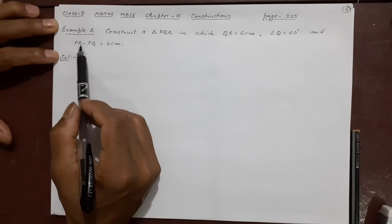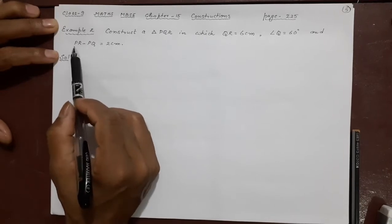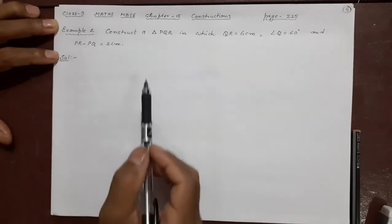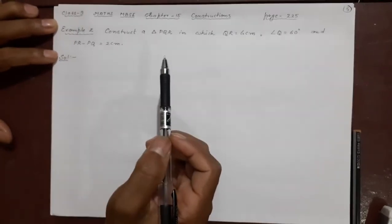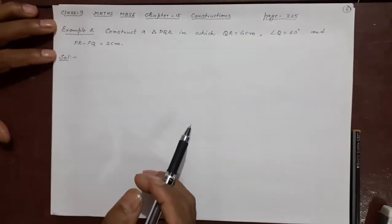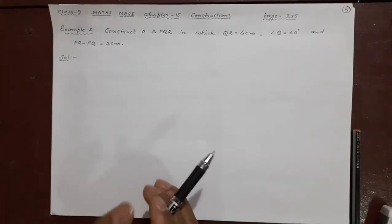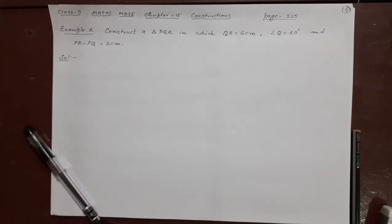And you have to make PR minus PQ. Remember here PR and PQ. The PR is this side, PQ is this side. So you have to use the second method, not the first one. That means extending the bottom side. You have to take the bottom side. It is not difficult at all. Let us start.